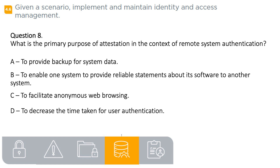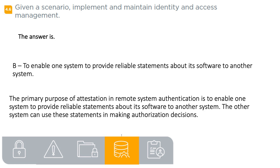Question 8. What is the primary purpose of attestation in the context of remote system authentication? A. To provide backup for system data. B. To enable one system to provide reliable statements about its software to another system. C. To facilitate anonymous web browsing. D. To decrease the time taken for user authentication. The answer is B. The primary purpose of attestation in remote system authentication is to enable one system to provide reliable statements about its software to another system. The other system can use these statements in making authorization decisions.